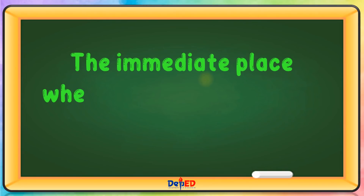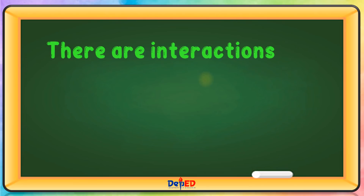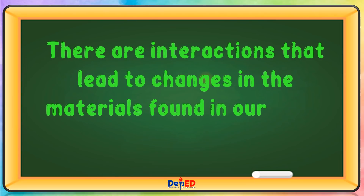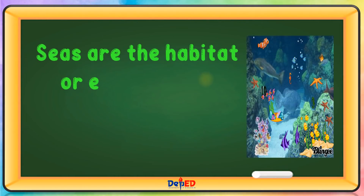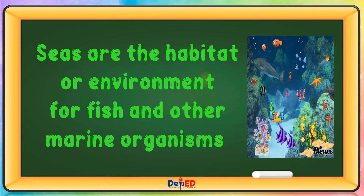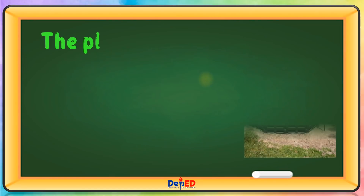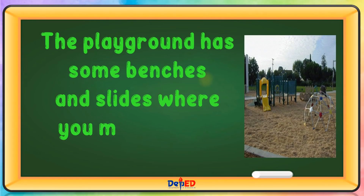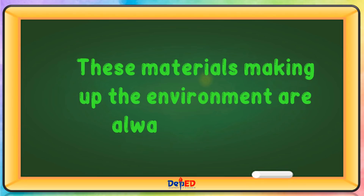The immediate place where you are exposed to is your environment. There are interactions that lead to changes in the materials found in our home and in our environment. Seas are the habitat or environment for fish and other marine organisms. The playground has some benches and slides where you may rest or play. These materials making up the environment are always changing.